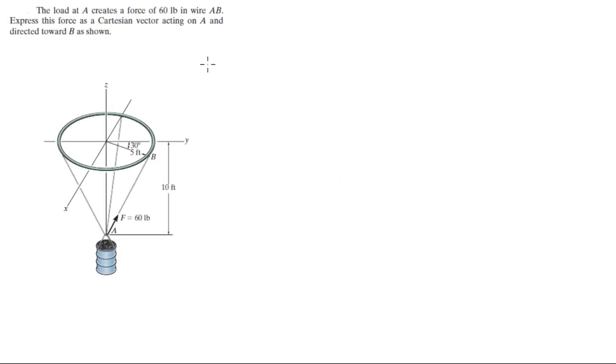For more videos visit forthesakeofEducation.com. Alright guys, let's do this problem that says the load at A creates a force of 60 pounds in the wire. Express this force as a Cartesian vector acting on A directed towards B.